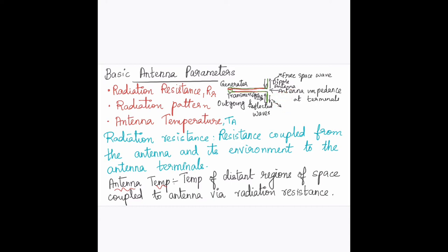Antenna temperature is not the physical temperature of the antenna itself, but rather the temperature of distant regions that is coupled to the antenna via its radiation resistance. So antenna temperature depends on the temperature of the regions surrounding the antenna. Both Rr and Ta are single-valued scalar quantities.